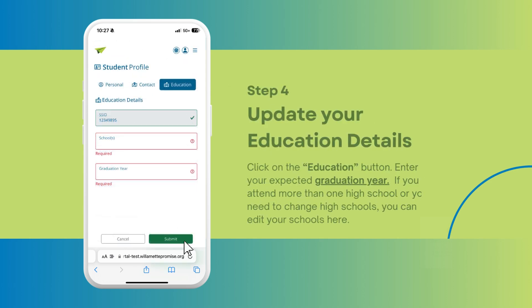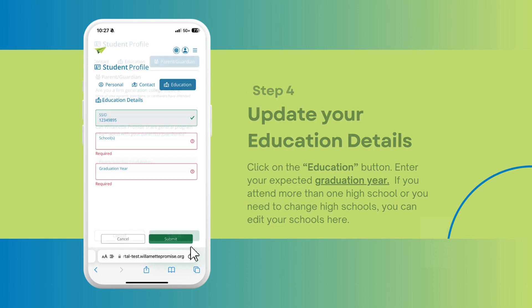Step 4: Update your education details. Click on the education button and enter your expected graduation year. If you attend more than one high school or need to change high schools, you can edit your schools here.